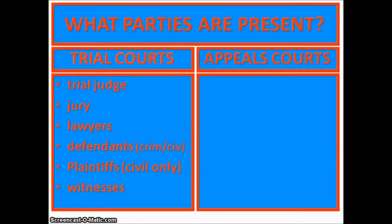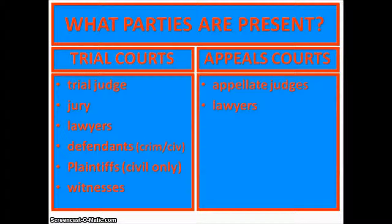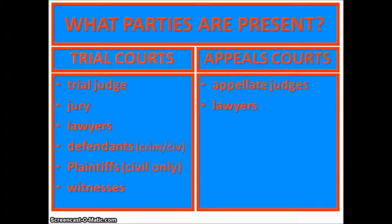An appeals court only has the appellate judges — in plural, because there's always an odd number of judges since all decisions are made by majority vote — and then the lawyers. That's it. The defendant usually is not there, the plaintiff in a civil case usually is not there, there are no witnesses, no jury, and no testimony. What happens is both sides file a written brief, which is basically their side of the story.